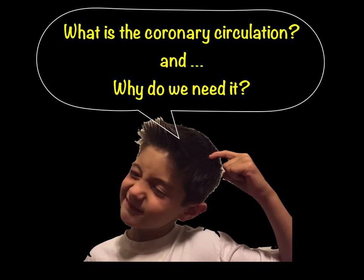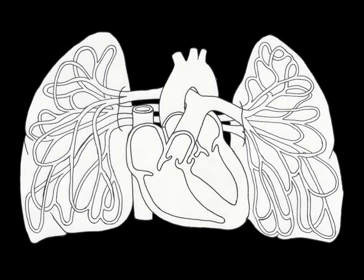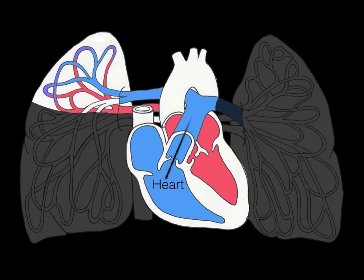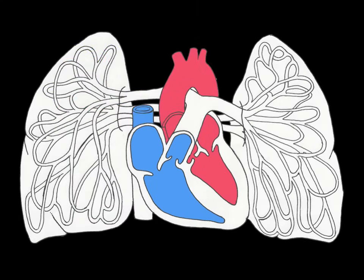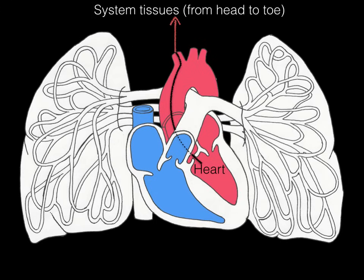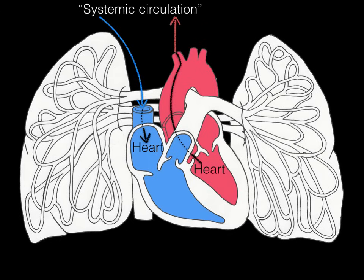The first question is: what is the coronary circulation and why do we need it? Here we've got a schematic of the heart. Deoxygenated blood from the heart is pumped to the lungs, the lungs exchange carbon dioxide with oxygen and send oxygenated blood back to the left side of the heart — that's the pulmonary circulation. Oxygenated blood then goes from the left ventricle via the aorta to all the systemic tissues from head to toe, and deoxygenated blood is brought by veins back to the right side of the heart — that's the systemic circulation.